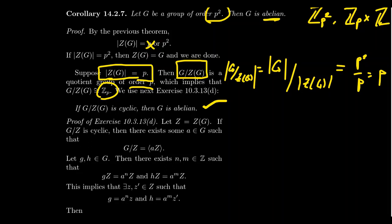There's only two P groups of order P squared, and they are the two abelian ones. This is all a consequence of the class equation, which has to do with the sizes of conjugacy classes. It's a pretty impressive result. And so that brings us to the end of lecture four about the class equation.